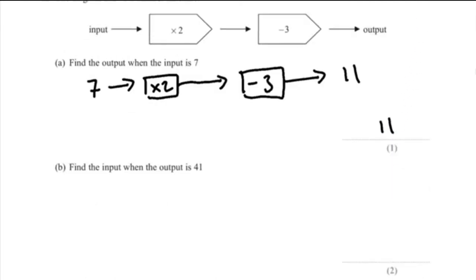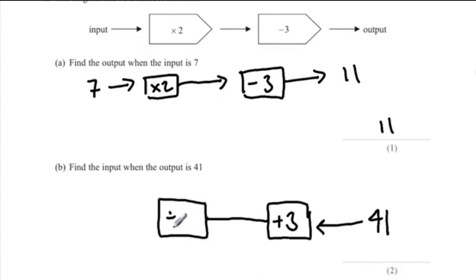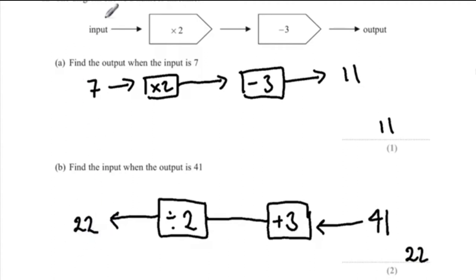Part B: find the input when the output is 41. Work backwards using inverse operations: 41 plus 3 equals 44, then 44 divided by 2 equals 22. The input is 22. Check: 22 times 2 is 44, minus 3 is 41. Correct.